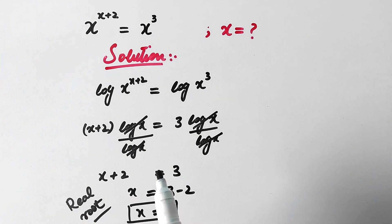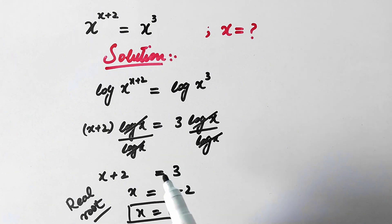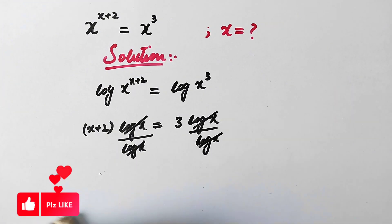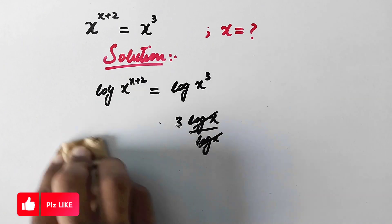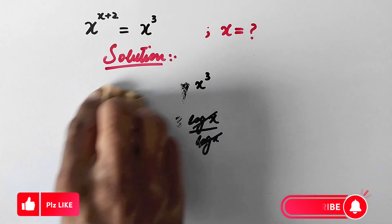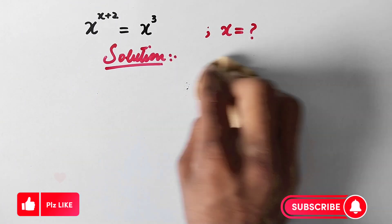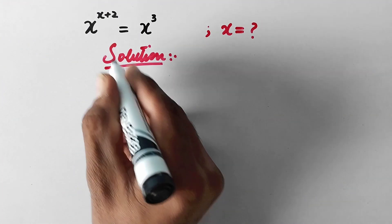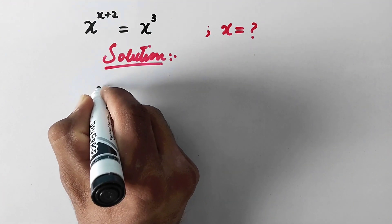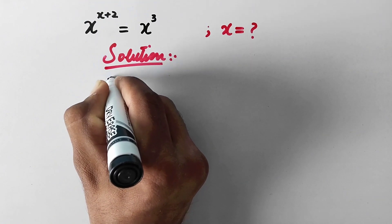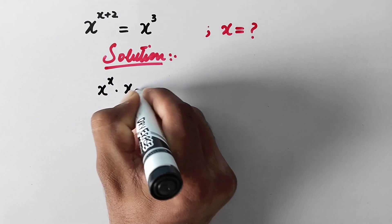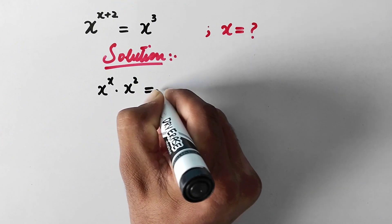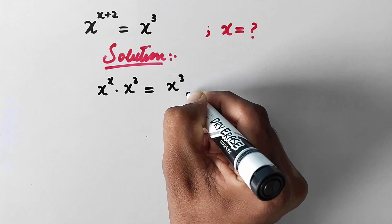Now we will solve the problem another way to find all possible roots of x. In the first step, we can write this as x to the power x times x to the power 2 is equal to x to the power 3.